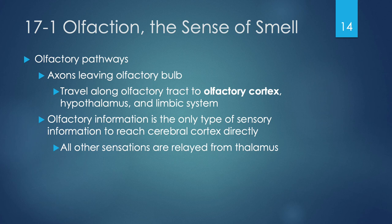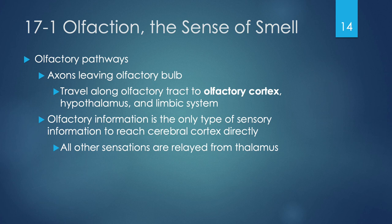Afferent fibers carry sensory information starting at our olfactory epithelium, collect into bundles of 20 or more, and go through the cribriform plate of the ethmoid bone to reach the olfactory bulbs — one on the right and one on the left in the cerebrum — where the very first synapse will occur. It's worth noting that because these signals travel along to the olfactory tract, olfactory cortex, hypothalamus, and limbic system, we have an emotional response to things that we smell. Our olfactory sense is the only one that has information reaching the cerebral cortex directly without any relay through the thalamus.